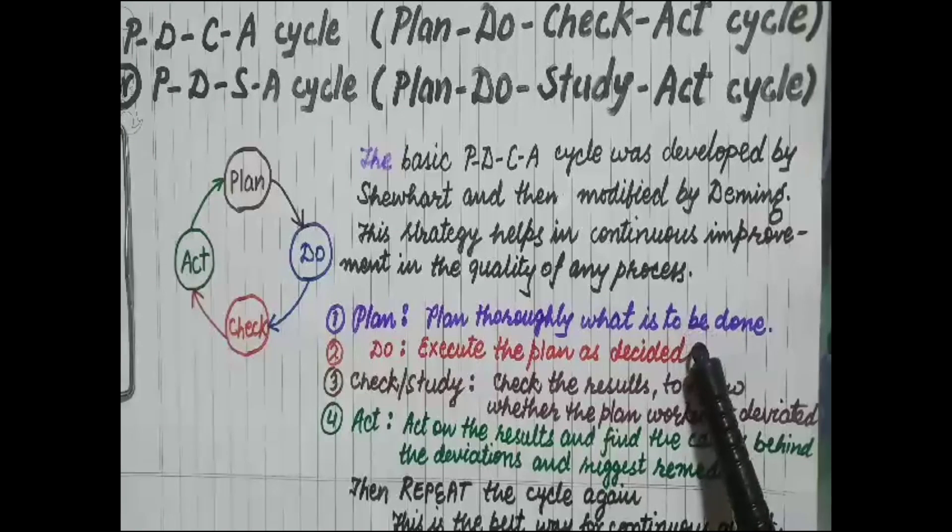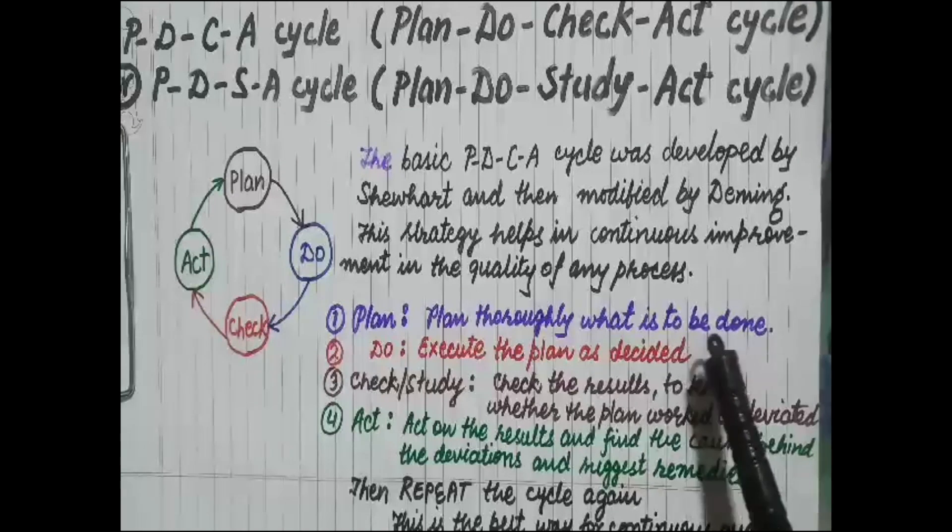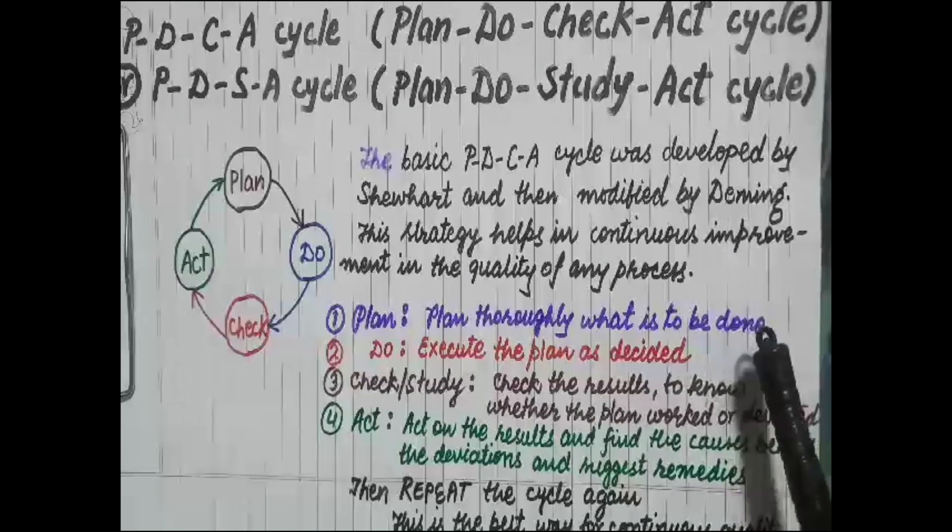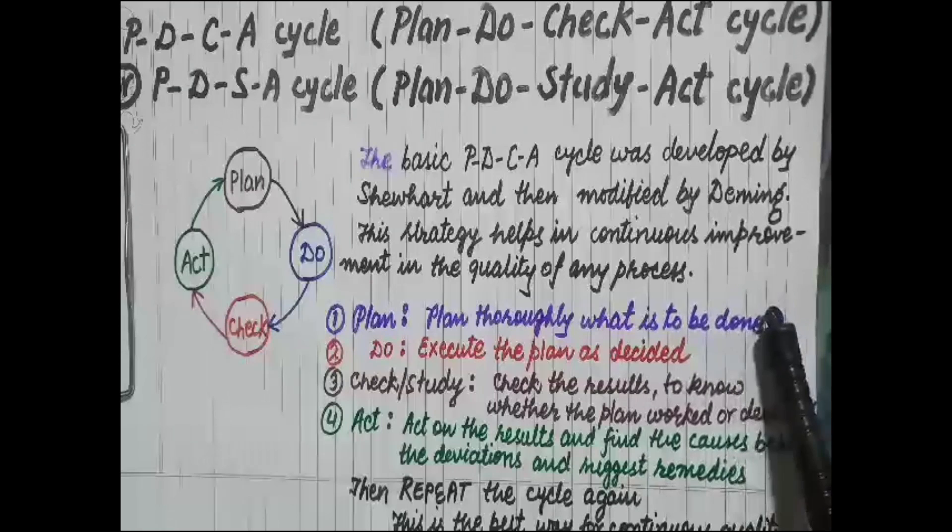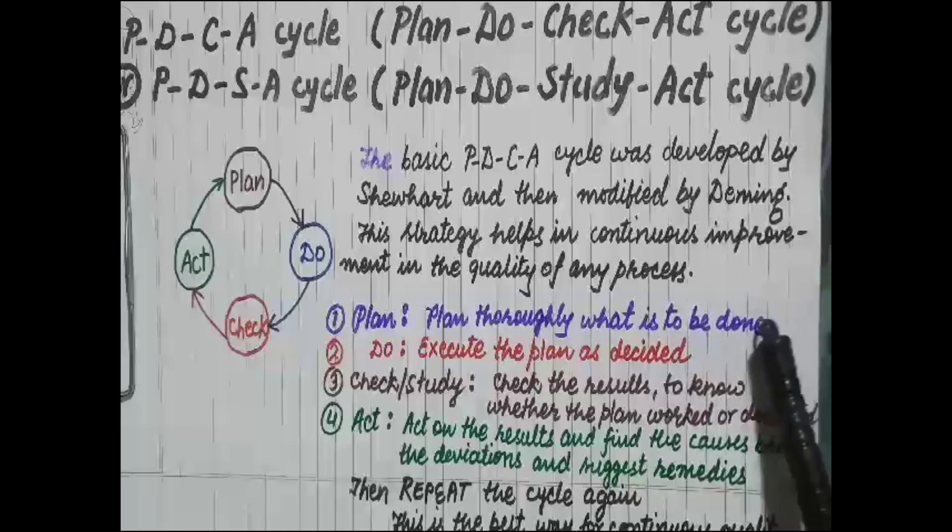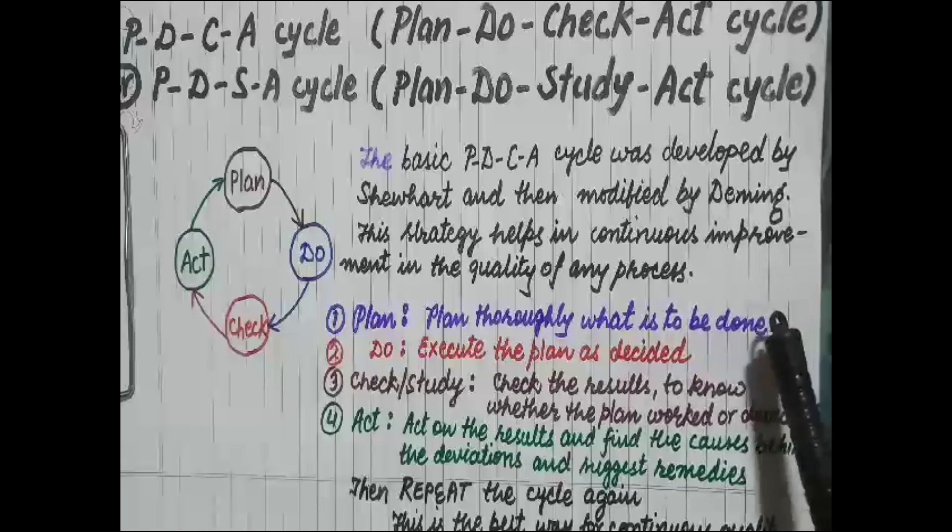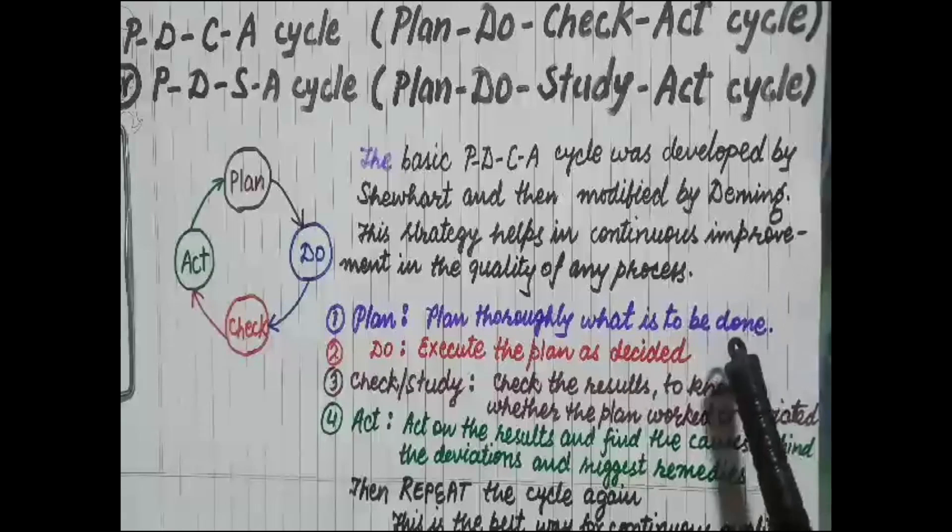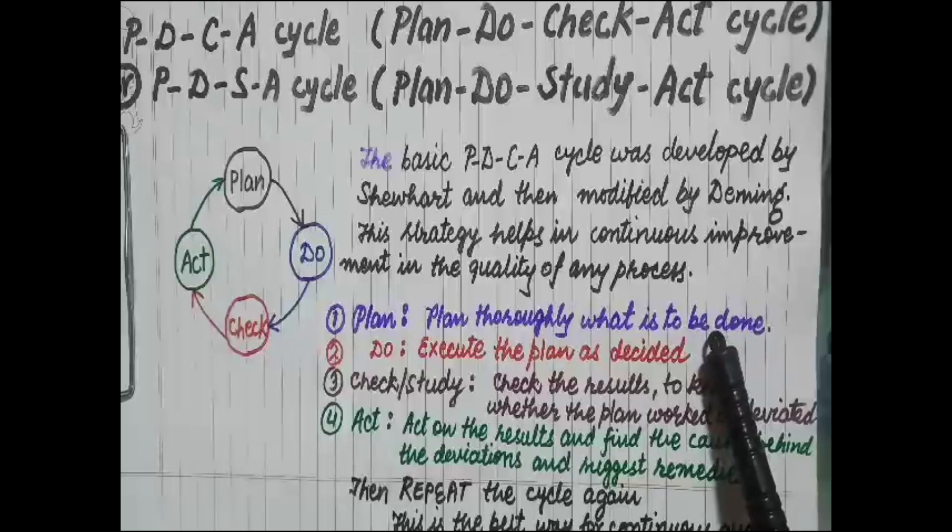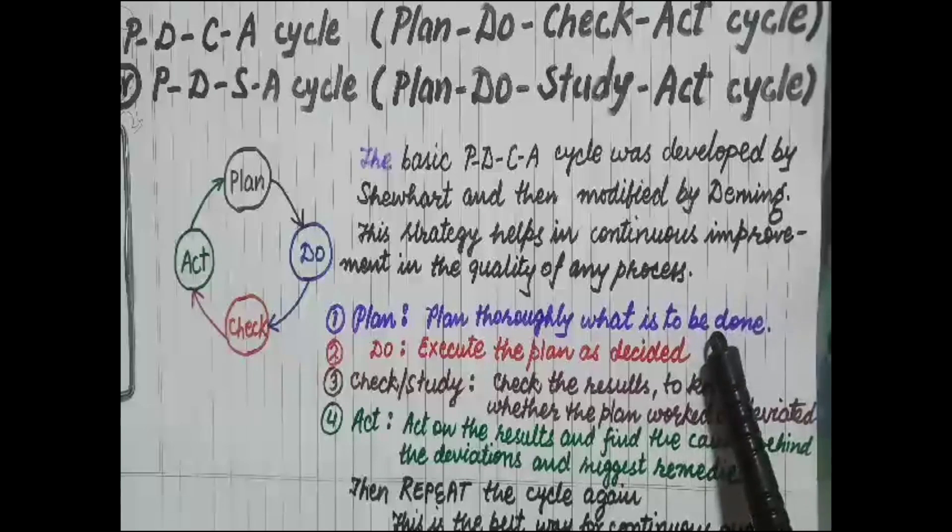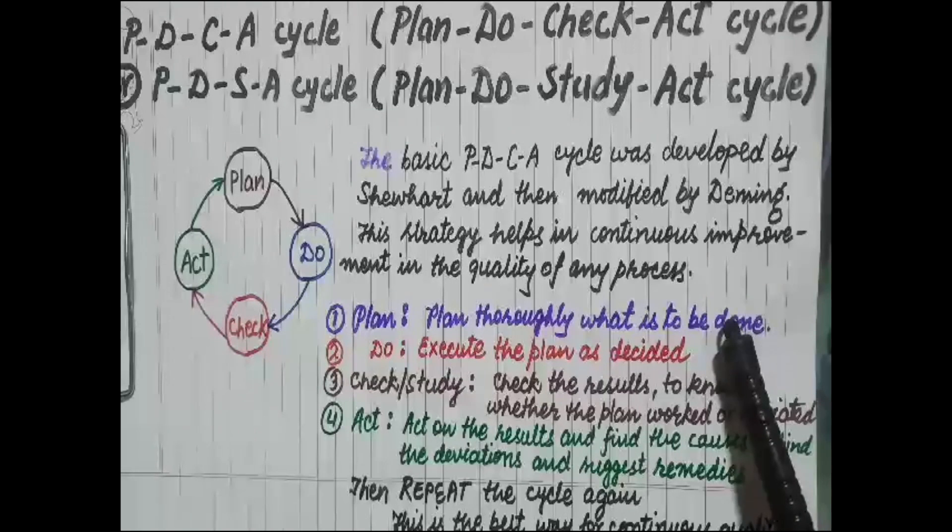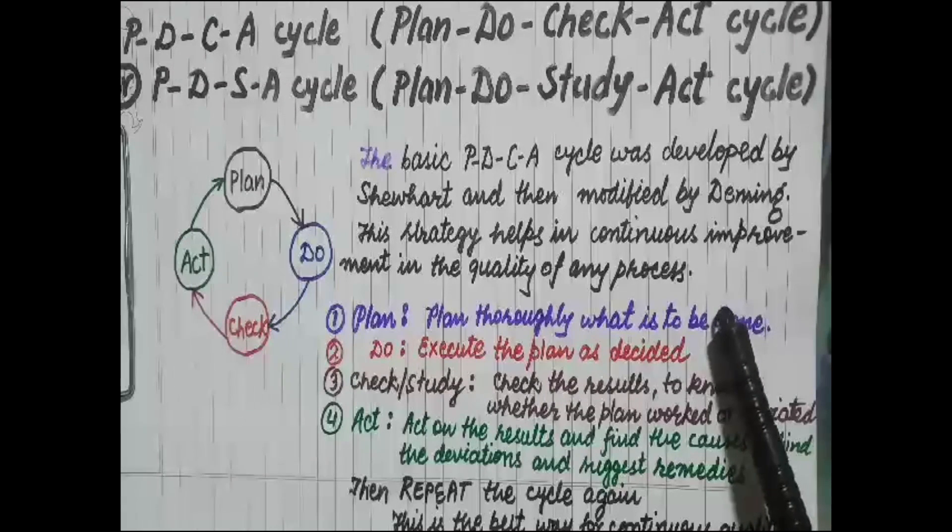We will take an example of a machine where a component is to be machined. We have to plan which machine to be used, what material to be used - the drawing is supplied by the design department - what tool to be used, whether coolant is to be used or not, and in what duration that component is to be manufactured.